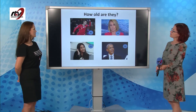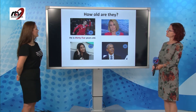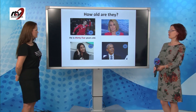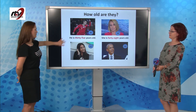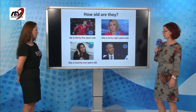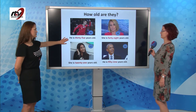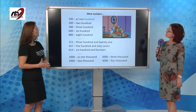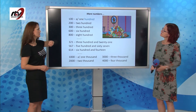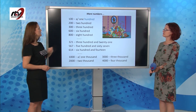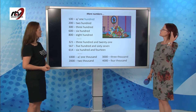How old are they? Let's see how we use numbers. He is thirty-five years old. She is forty-eight years old. She is twenty-one years old. He is fifty-nine years old. Now, o sută in English is a hundred — one hundred. Două sute: two hundred. Trei sute: three hundred. Șase sute: six hundred. Opt sute: eight hundred.